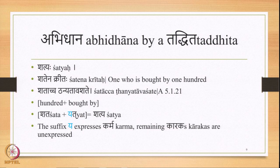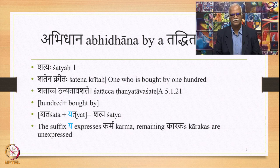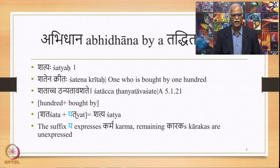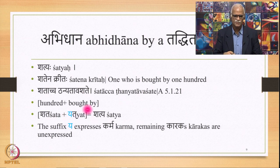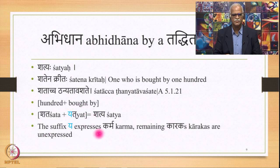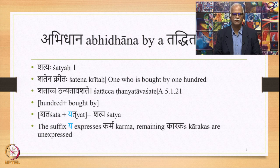Now let us look at an example where a Tadhita suffix expresses the Karaka. The example is 'Shatyaha,' meaning 'Shatenak kritaha' — one who is bought by 100 of something. Prescribed by the Sutra 5.1.21 'Shatachya thanyatav ashate,' when we have the meaning 100 and bought by, where 100 acts as the instrument, we have Shata and the Tadhita suffix Yat added to it. This Yat expresses Karma. So the suffix here expresses the Karma Karaka — something that is bought for 100 rupees.